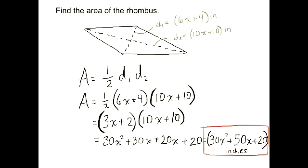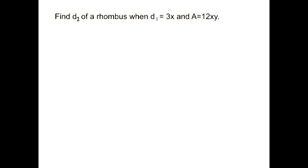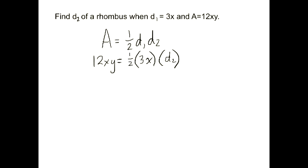Let's move on to another problem. Here we're going to find d2 of a rhombus when d1 is 3x and area is 12xy. So we're going to take our area formula, 1 half times d1 times d2, and we're going to plug in everything that we know. We know that the area of the rhombus is 12xy. 1 half stays 1 half. d1 is 3x, so we're going to plug that in there. And d2 is what we're trying to find, so I'm going to leave it as d2.